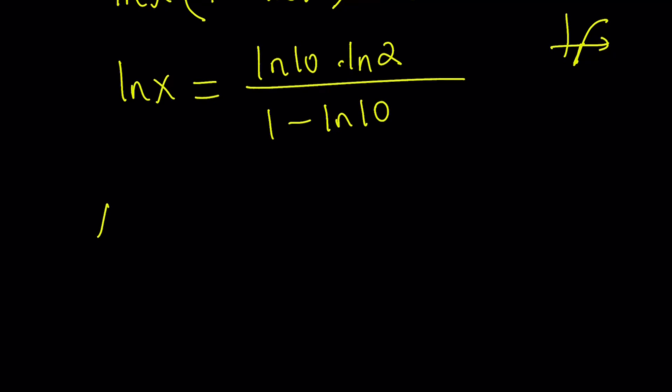So, I just need to do the following. x can be written as e to the power ln x. Of course, x needs to be positive, needless to say. And it is going to be positive. So, I can now write this as e to the power ln 10 times ln 2 over 1 minus ln 10.